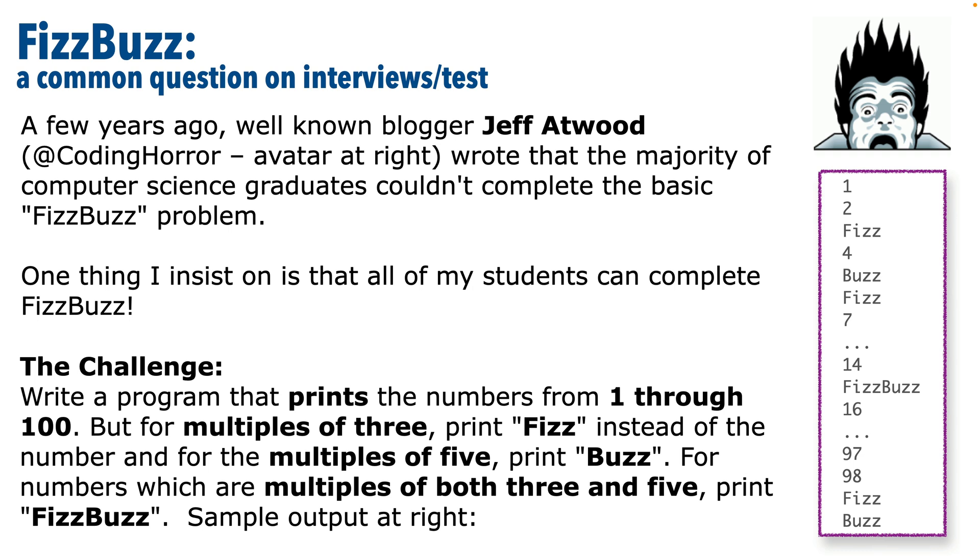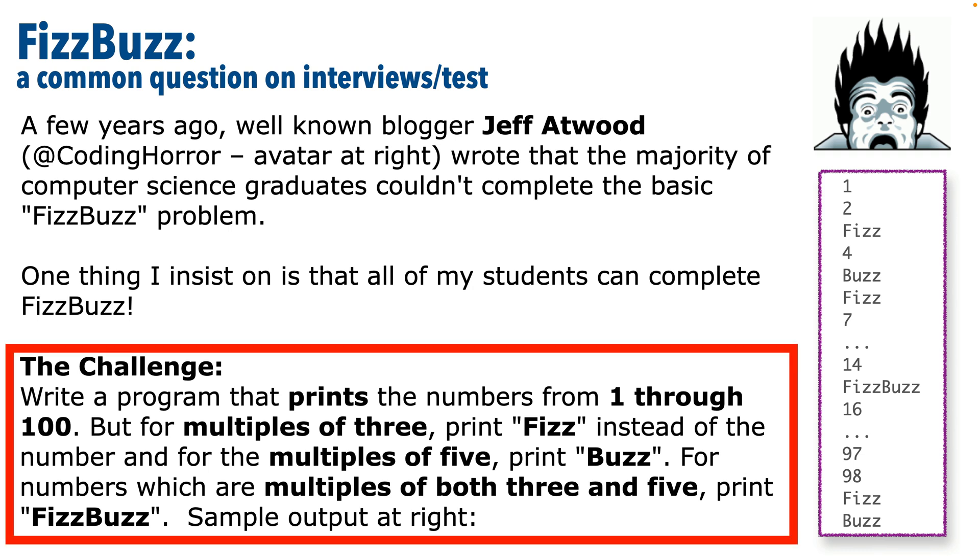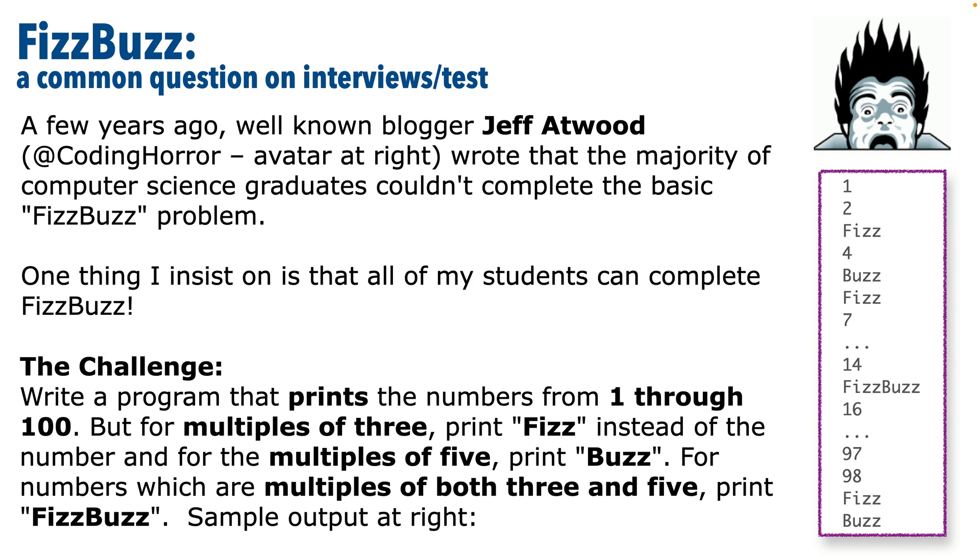Now as far as the problem goes, here's the variation I usually present. Go through the numbers 1 through 100. If a number's evenly divisible by 3, print Fizz. If it's evenly divisible by 5, print Buzz. If it's evenly divisible by both 3 and 5, print FizzBuzz. Otherwise, print the number. Here's an example of output on the right. Now let's take a look at some solutions.